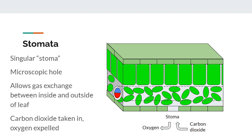The epidermis is peppered with microscopic holes called stomata. The purpose of stomata is to allow gas exchange between the inside and outside of a leaf, such as oxygen, carbon dioxide, and water vapor. There are several different types of stomata depending on the species of plant, which may be worth looking into on your own time. Because it is needed for photosynthesis, carbon dioxide moves into the leaf through the stomata, and oxygen moves out of the leaf as a product of photosynthesis.